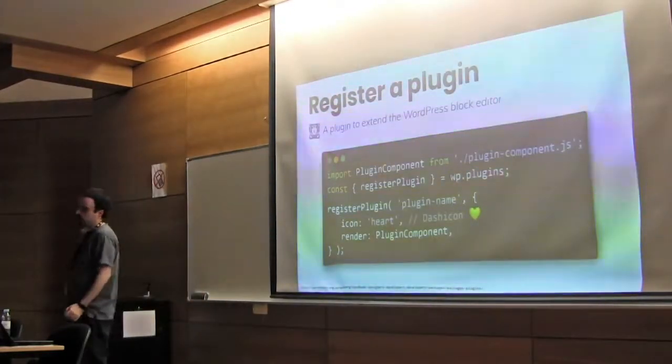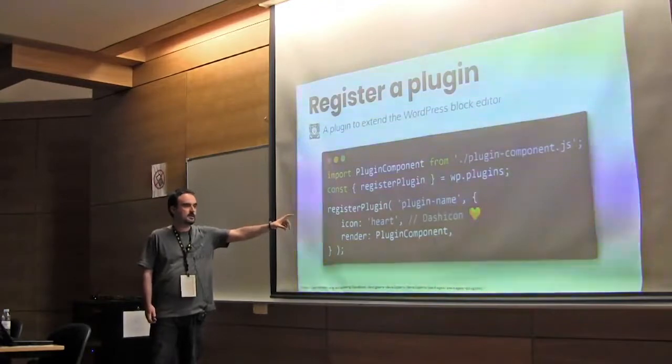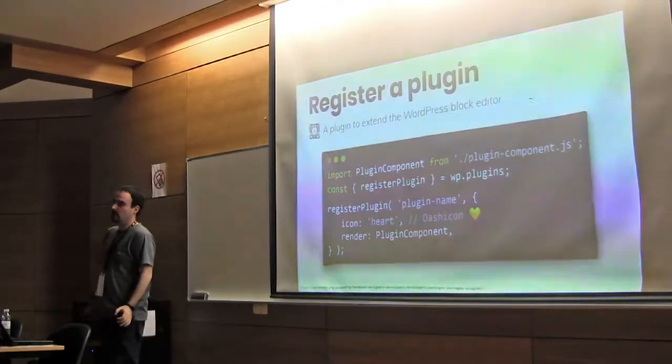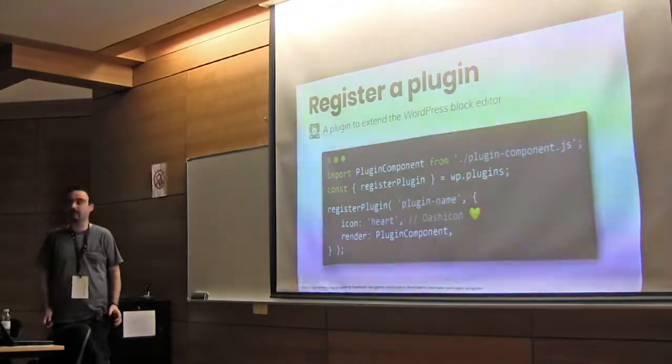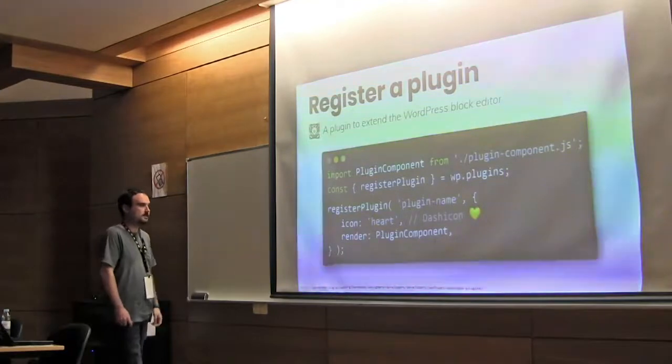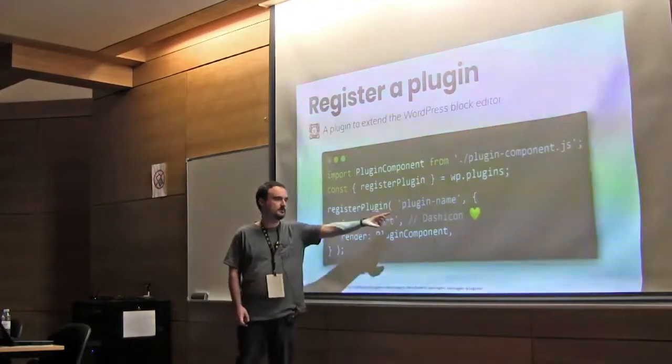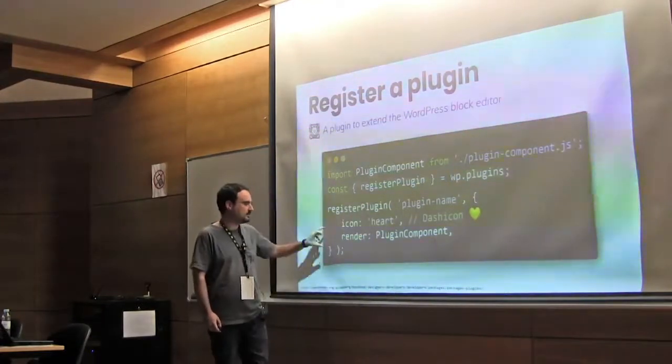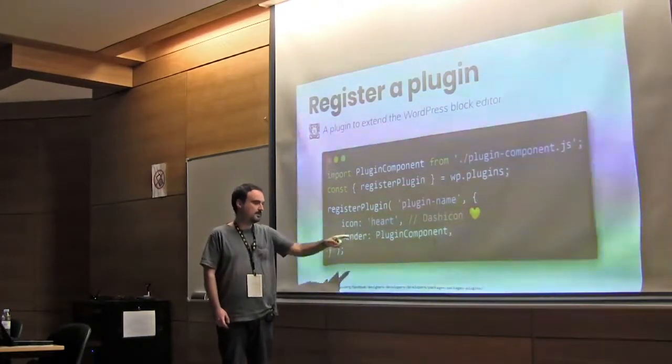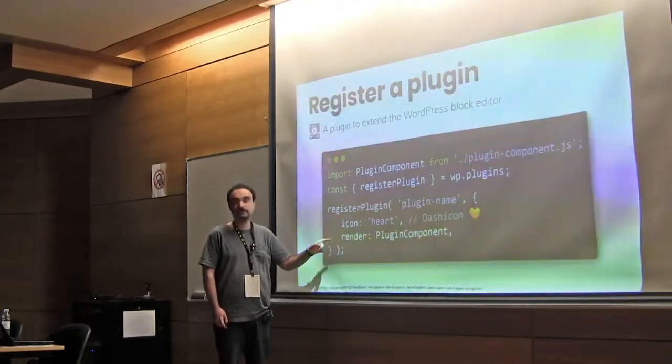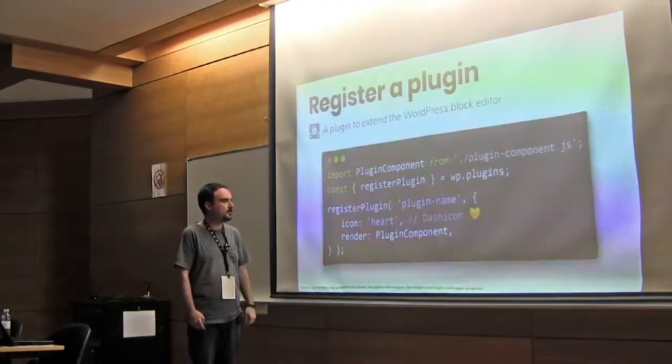Another function that maybe you wouldn't even know before, is registerPlugin. When I say plugin, I don't mean a WordPress plugin. I mean a plugin that extends Gutenberg, that extends the editor. A plugin for the editor. The way to create a plugin to extend the editor, is using registerPlugin, with a name, and an object with settings. An icon, also a Dashicon, and a component. The component that will be rendered in the editor. So, let's see what the plugin component looks like.